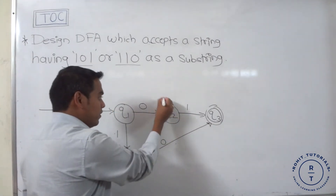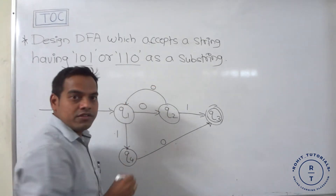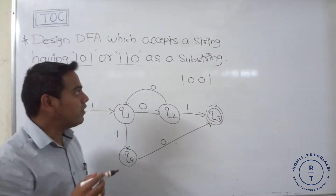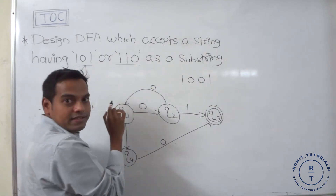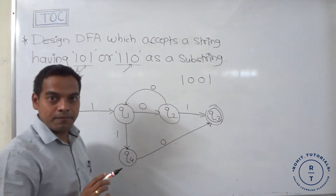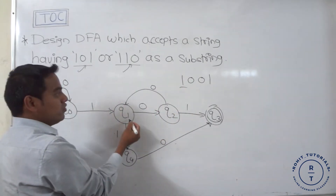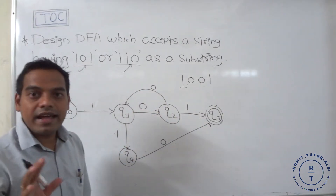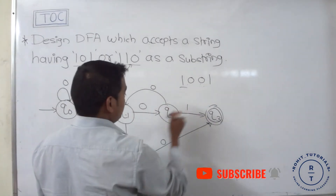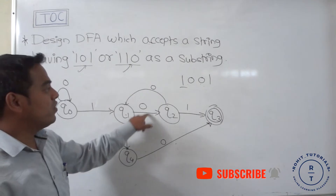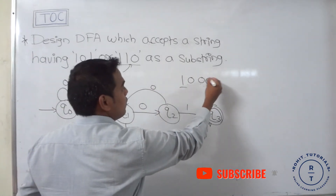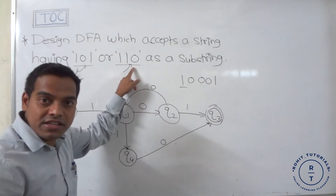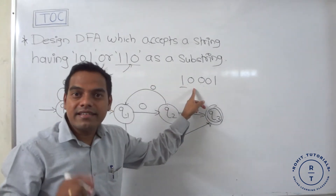So what happens when 0 occurs at Q2? Consider the string 1001. This string is not accepted by the finite automata because it doesn't contain either 101 or 110 as a substring. Tracing: 1 goes to Q1, 0 goes to Q2, 0 goes to Q1, 1 goes to Q4. So the automata correctly does not accept it.